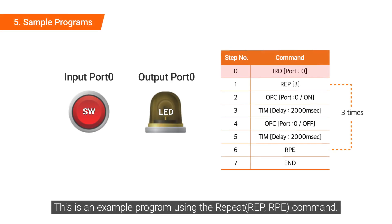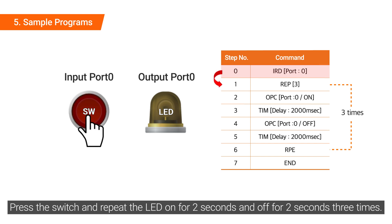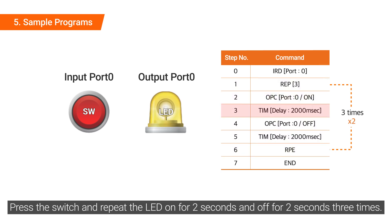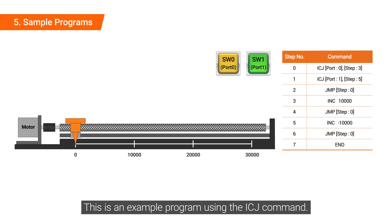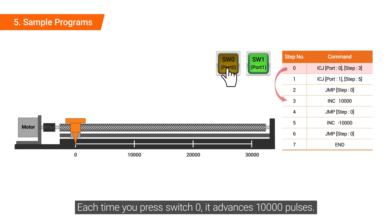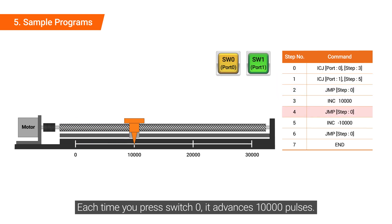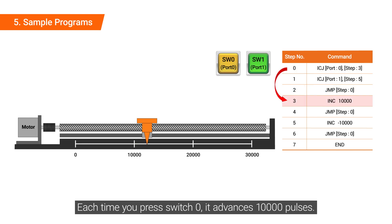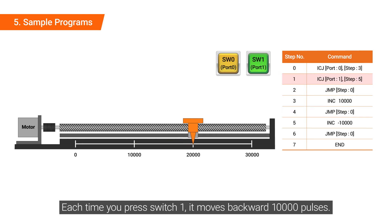This is an example program using the REPEAT command. This is also an example program using the ICJ command: each time you press switch 0, it advances 10,000 pulses, and each time you press switch 1, it moves backward 10,000 pulses.